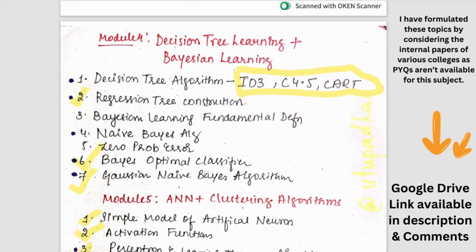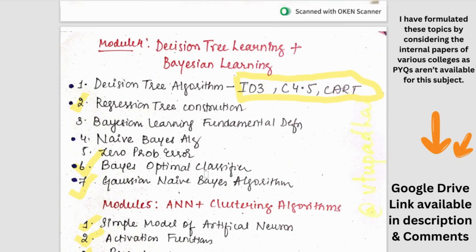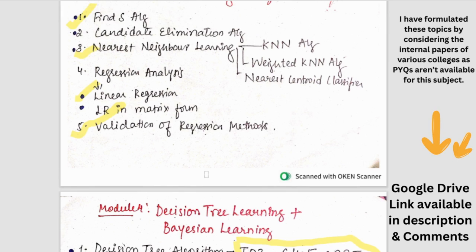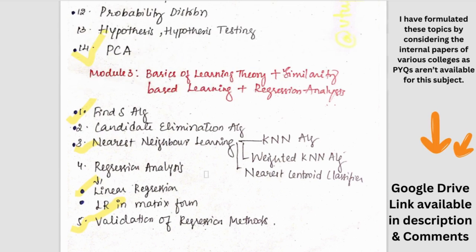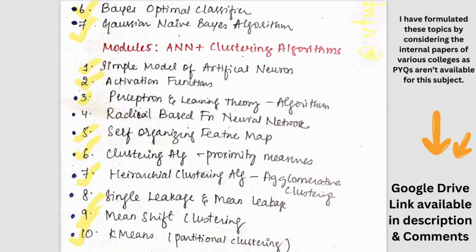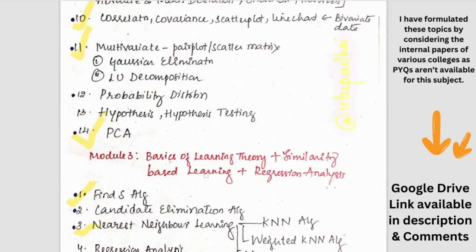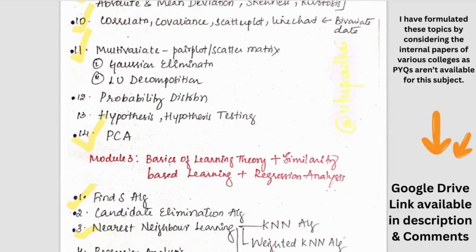So I would say that fifth module and fourth module are a bit tricky because they have numericals mostly, problems mostly. So either you get full marks in those or even if one step is wrong, you miss the marks. So I would say that concentrate on first module, second module, and third module. You can easily fetch 20, 20, 20 - 60 marks here.